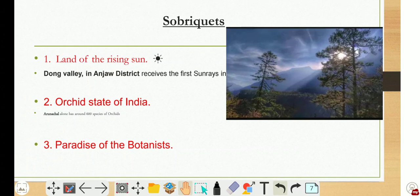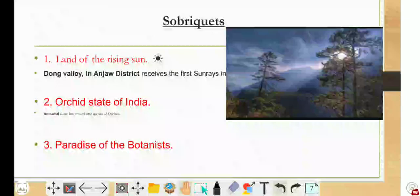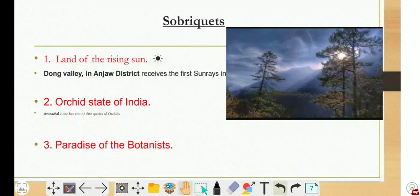And the third sobriquet is the Paradise of the Botanist. It is called the Paradise of the Botanist because of its forest biodiversity and the varieties of plants and species. Because of that, it is a perfect place to study and explore for botanists. So that's all for today.